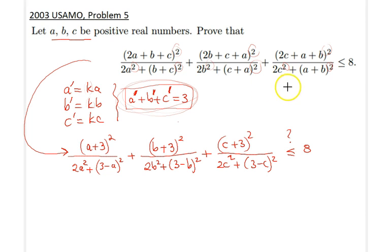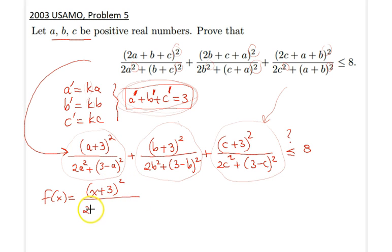So what I did is I transformed the problem into something really much more tractable and easy to handle. Now realizing that each of these looks like we have a function f(x) in the form (x+3) squared divided by 2x squared plus (3-x) squared.